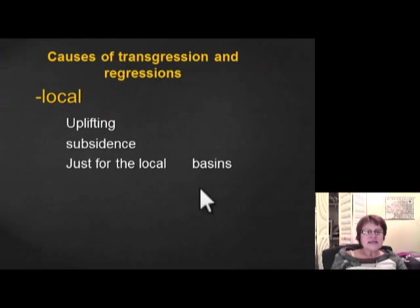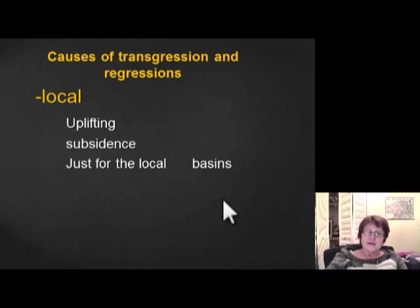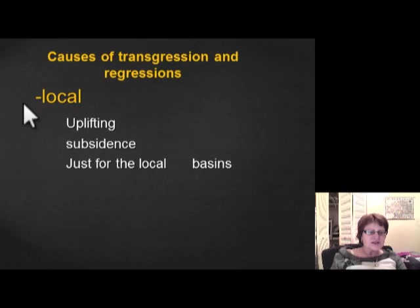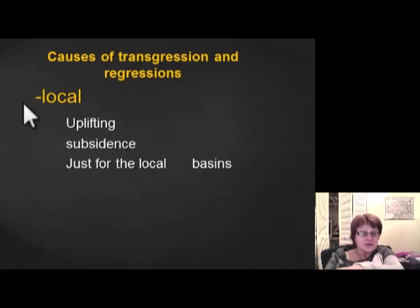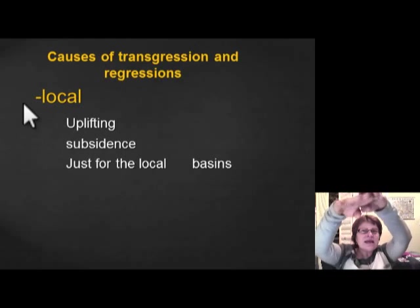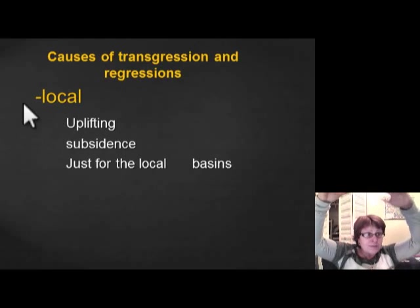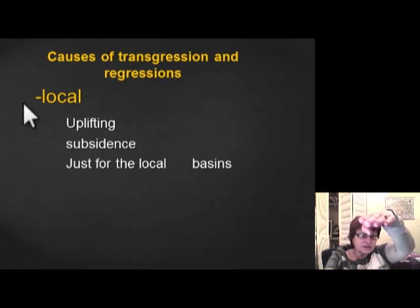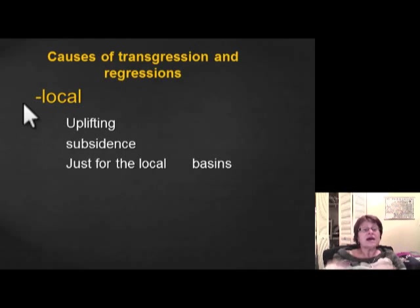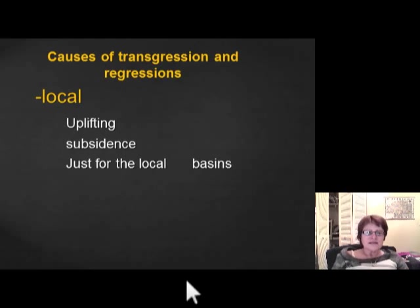Local sea level changes include uplift — for example, in western North America at the oceanic-continental plate boundary, mountains are being pushed up, so locally it appears sea level is falling even as global sea level rises. There can also be subsidence. These local effects are seen only in that specific area, not worldwide. That concludes this segment.